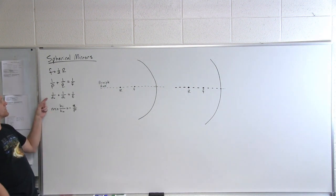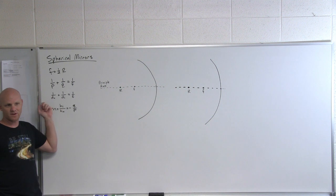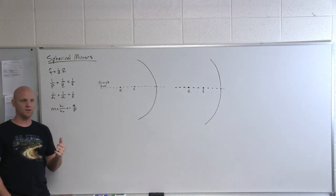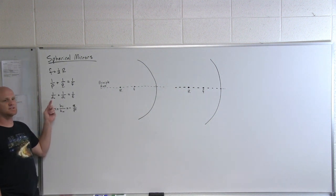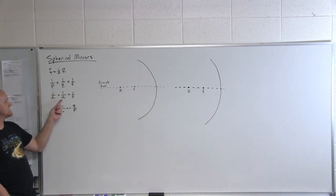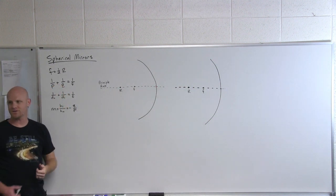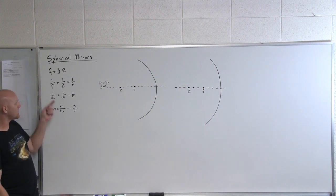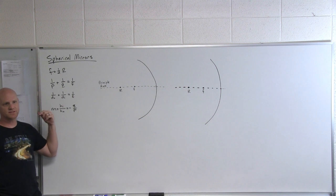Sometimes you'll see it as 1 over DO plus 1 over DI equals 1 over F, which is personally my favorite because then I don't have to remember what P and Q mean. DO is the distance to the object from the center of the mirror, the vertex of the mirror. DI is the distance to the image from the center of that mirror. So P corresponds to the distance to the object and Q corresponds to the distance to the image.